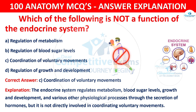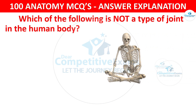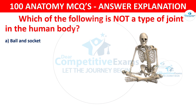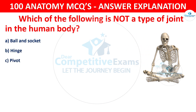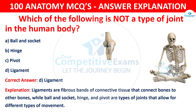Question number 92: Which of the following is not a type of joint in the human body? The options are: Ball and socket, Hinge, Pivot, or Ligament. The correct answer is D — ligament. Ligaments are fibrous bands of connective tissue that connect bones to other bones, while ball and socket, hinge, and pivot are types of joints that allow for different types of movements.